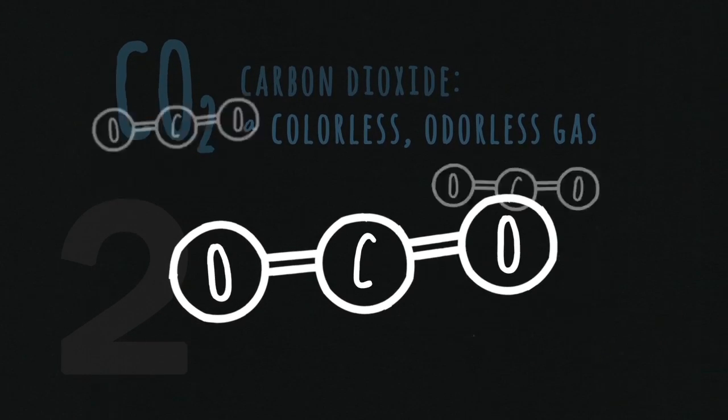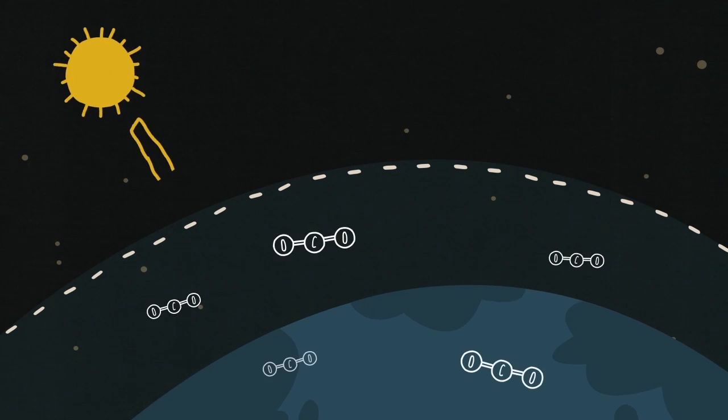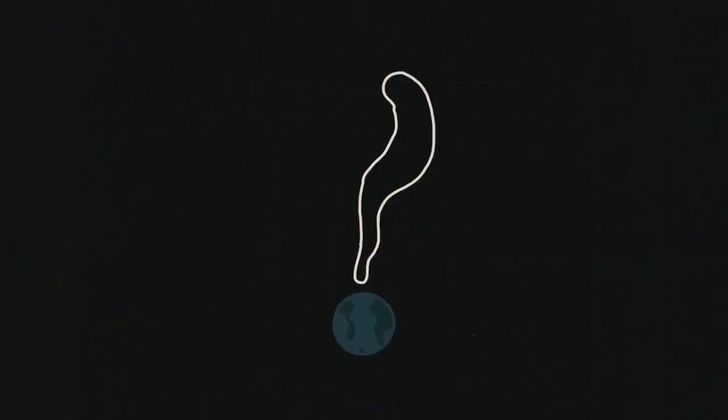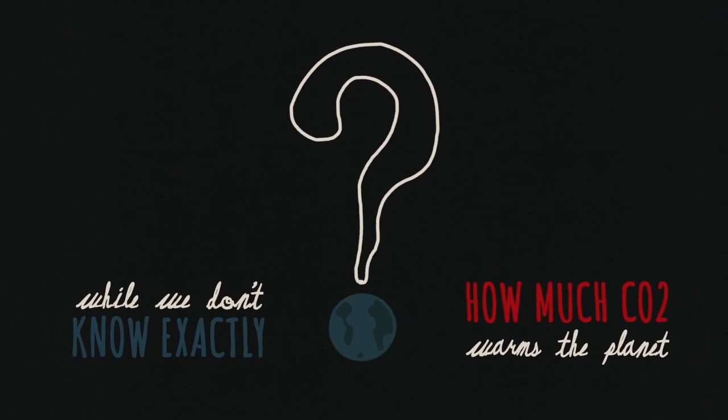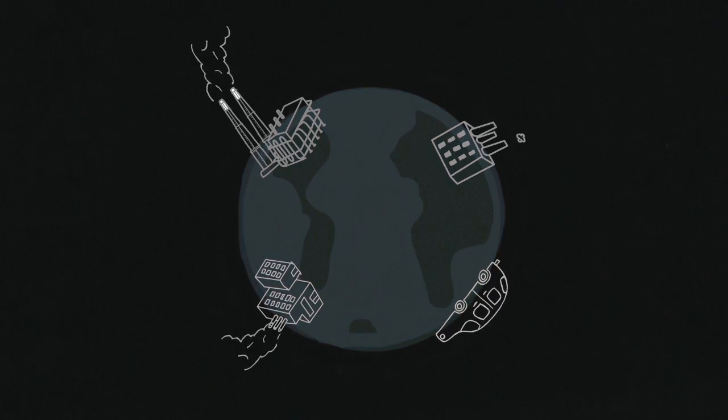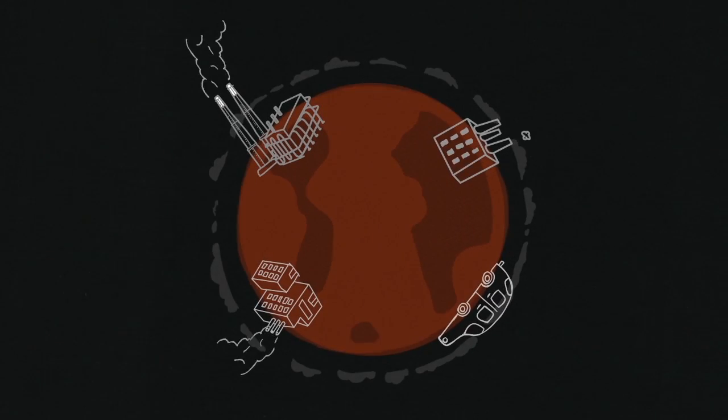When the Sun delivers heat to this planet, carbon dioxide makes it harder for that heat to escape back into space. While we don't know exactly how much a given amount of carbon dioxide warms the planet, it's basic physics that over time, more CO2 in the atmosphere means a hotter Earth.